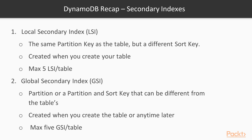Secondary indexes come in two types. The local secondary index (LSI) has the same partition key as the table but a different sort key. It can only be created when you create the table, and you can have a maximum of five LSIs per table. The global secondary index (GSI) can have a partition key, or a partition and sort key, that differ from the table's. You can create a GSI at table creation time or any time afterwards, with a maximum of five GSIs per table.